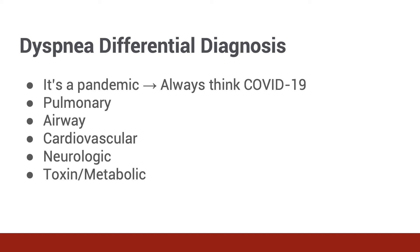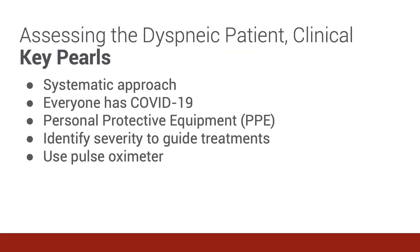Remember that during a pandemic, all dyspneic patients should be assumed to have COVID-19 until proven otherwise. Let's talk about a few key pearls. A systematic approach is required to ensure that you do not miss anything. During a pandemic, every dyspneic patient should be treated as if they have COVID-19, and therefore every patient should be evaluated with appropriate personal protective equipment. You must identify patients with respiratory distress and failure and initiate therapy immediately. Finally, remember to use the pulse oximeter for every patient with dyspnea.